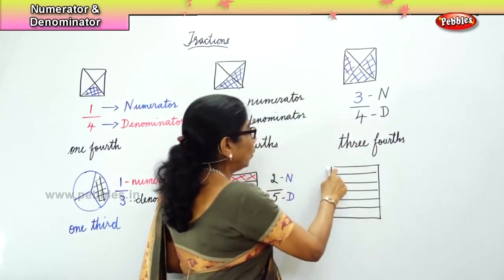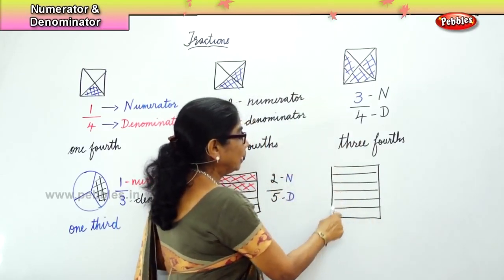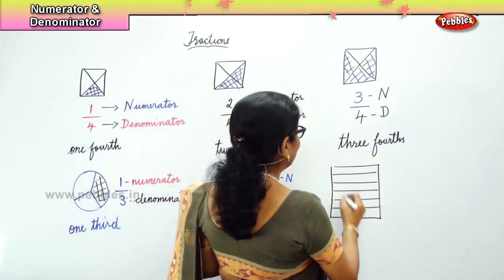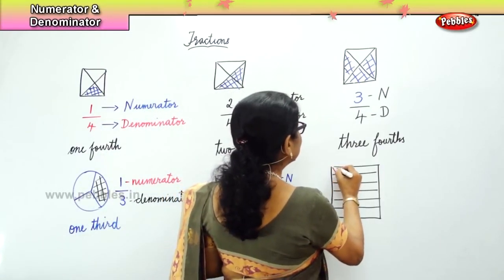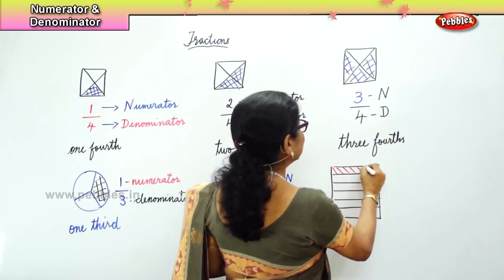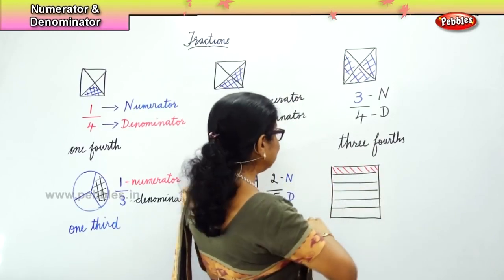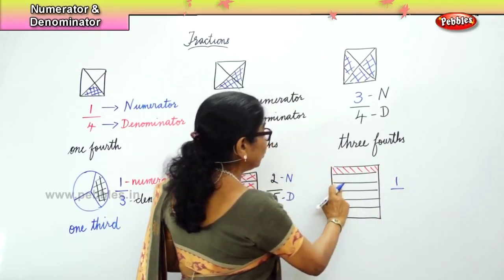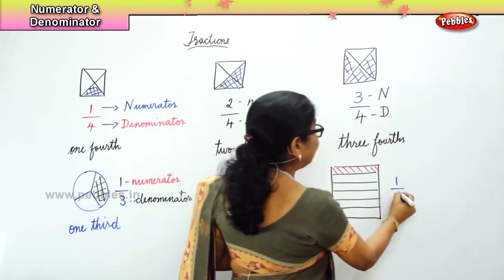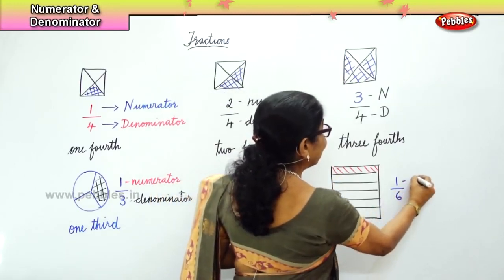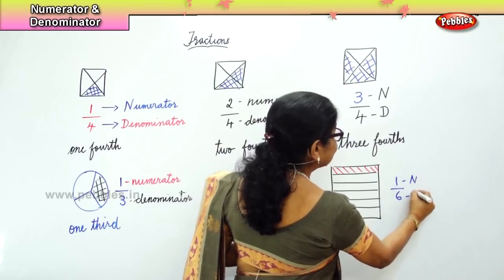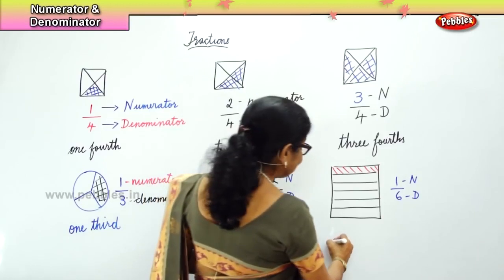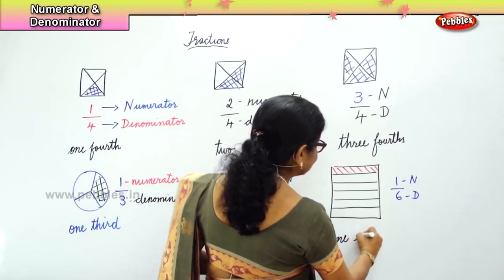Here you have 1, 2, 3, 4, 5 — we have divided that into 6 portions and we're going to shade just one portion. That is 1 part out of 6, so 1 is the numerator and 6 is the denominator, and we call this one sixth.